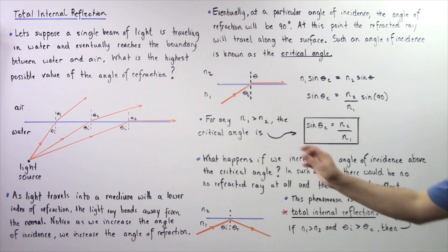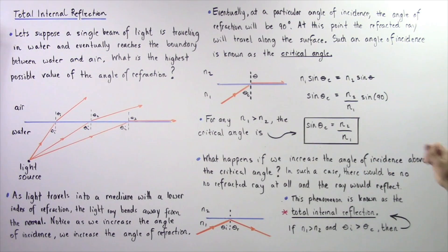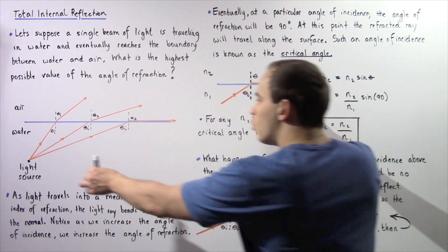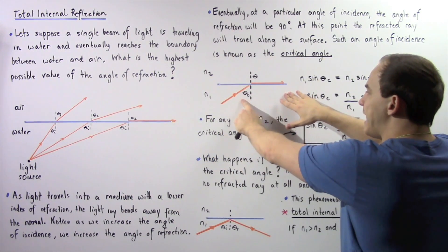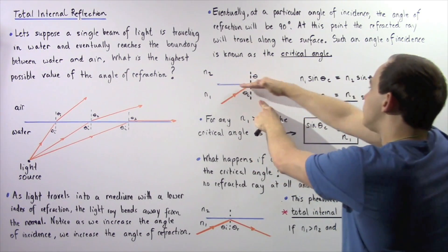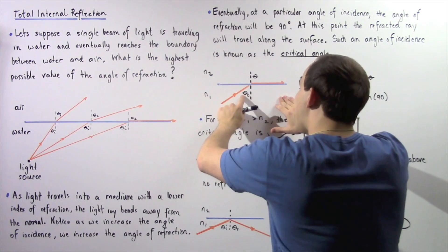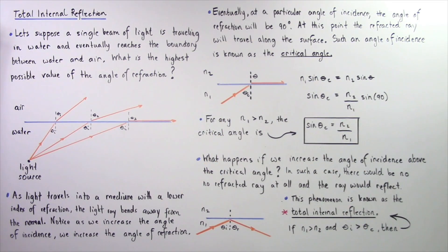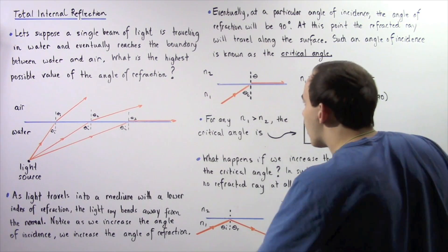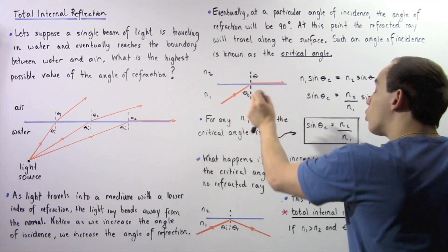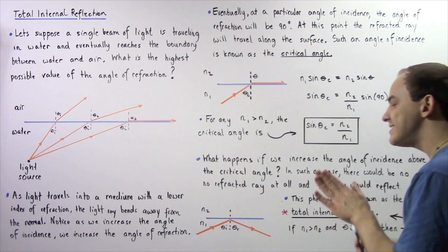What happens if we increase the angle of incidence above the critical angle? If we continue bending the light past the critical angle, the refracted ray travels directly along the boundary. But if we continue increasing the angle of incidence beyond that, Snell's law tells us there would be no refracted ray — all of the light would reflect. This phenomenon is known as total internal reflection. When the angle of incidence is greater than the critical angle, all the light reflects.